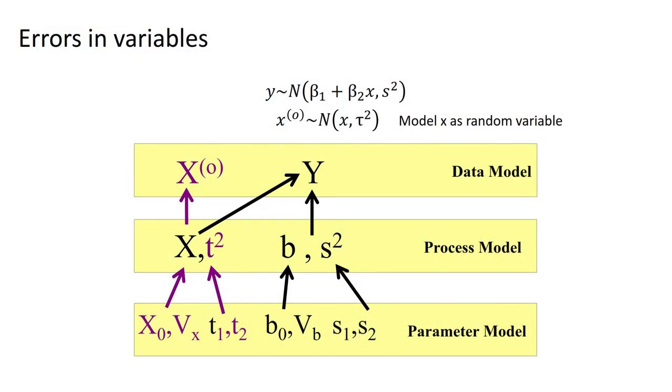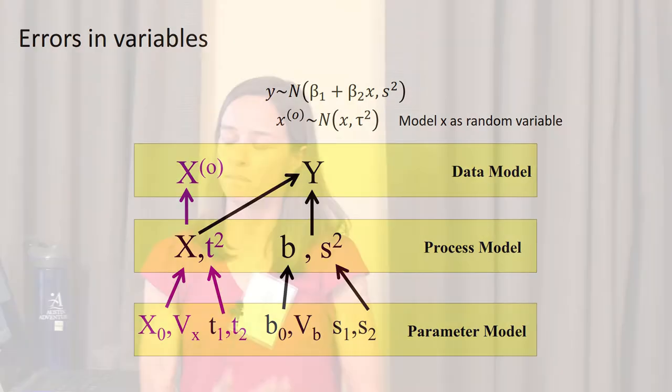Errors-in-variables is a way to deal with the fact that we can often have errors in X, or uncertainty in our predictor variables, as well as in our response variables. The classic assumption is that it's all in the response variables, but in ecology, the reality is that it's often also in our predictor variables. How do you deal with that? The Bayesian framework, because we have this probabilistic structure, allows us flexibility to build that into a model.